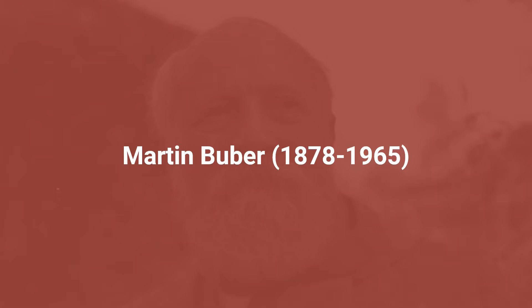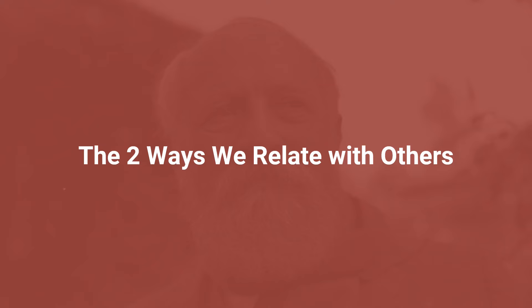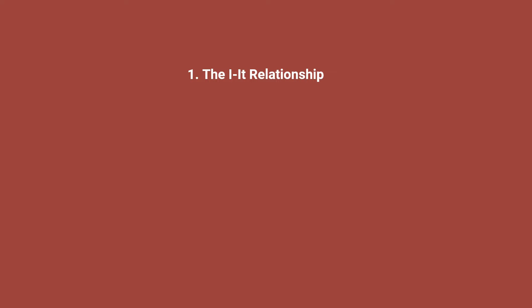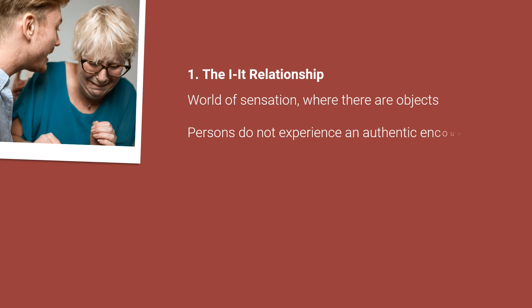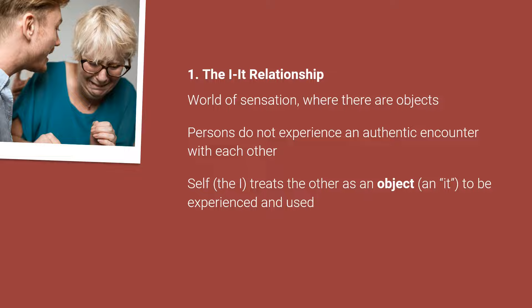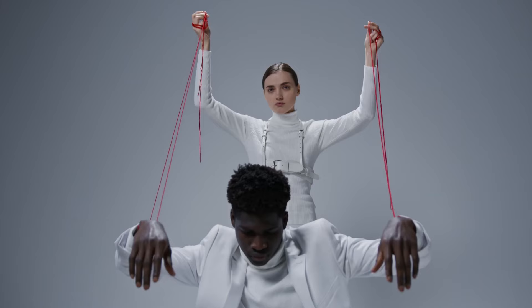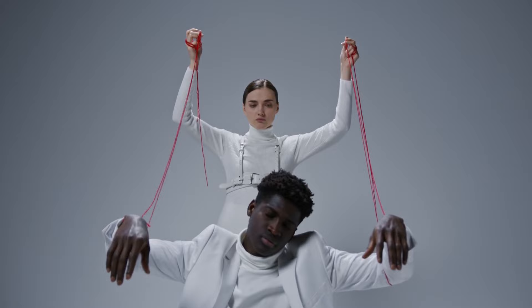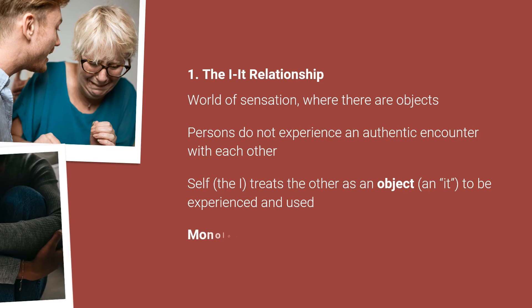In his book entitled I and Thou, Buber identified two ways in which the self, or the I, relates with the other. The first one is the I-it relationship. The I-it relationship, according to Buber, refers to the world of sensation where there are objects. In this relationship, human persons do not experience an authentic encounter with each other. Rather, what happens is that the self, or the I, treats the other as an object to be experienced and used. Deep down, the I-it relationship is all about oneself, because others are seen merely as objects that serve one's interest. It is not a dialogue, but a monologue — a relationship with one's own self.